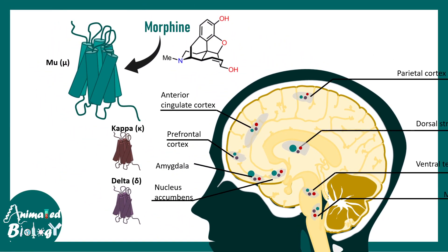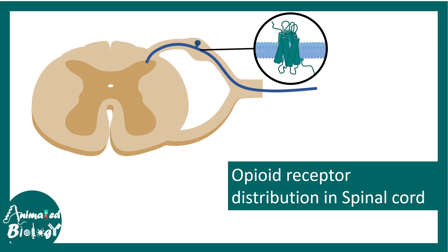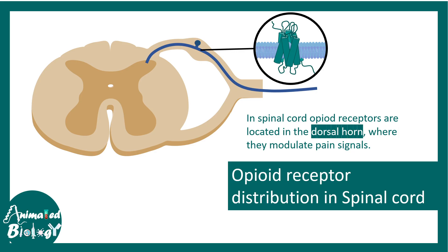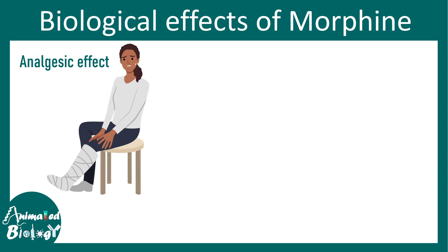Among these receptors, morphine acts like a full agonist towards the mu receptor. In the spinal cord, opioid receptors — especially the mu opioid receptors — are present in the dorsal horn, and they have a role in modulating pain.